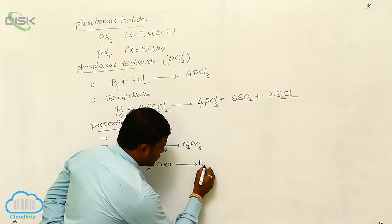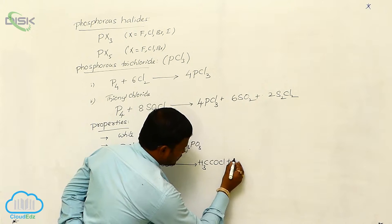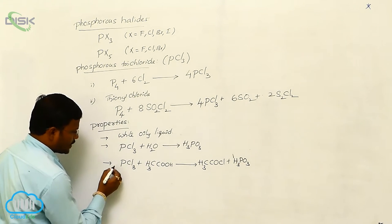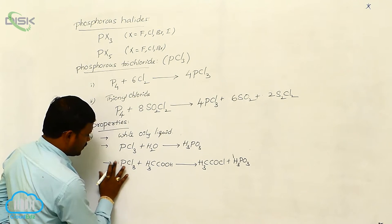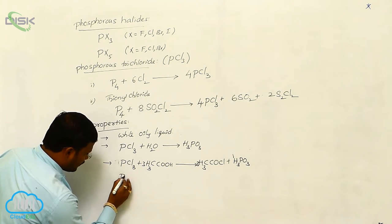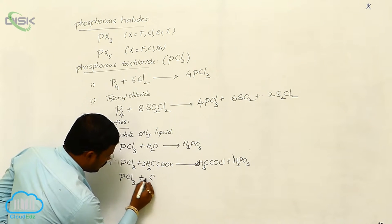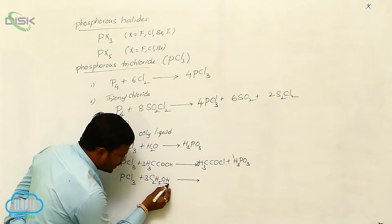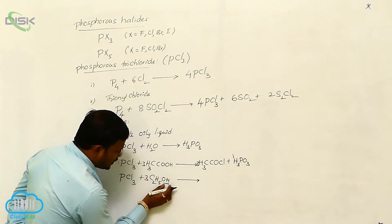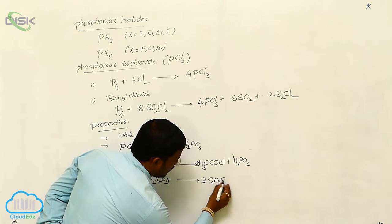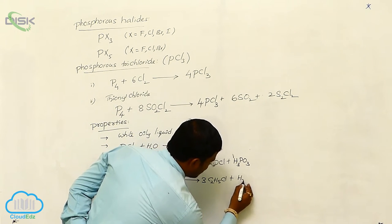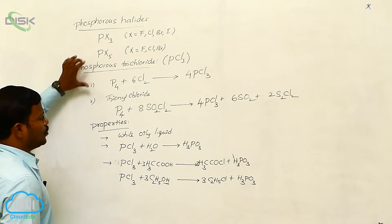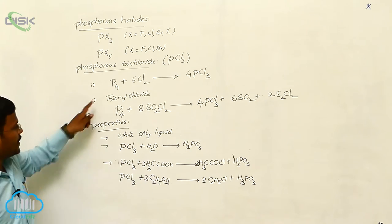PCl3 reacts with organic substances containing OH groups, producing CH3COCl and H3PO3 (3 molecules each). Similarly, PCl3 reacts with ethyl alcohol, since ethyl alcohol also has an OH group. The hydroxy group is substituted with a chlorine atom from phosphorus trichloride, and the resulting compounds include H3PO3. This covers the preparation and properties of phosphorus trichloride.